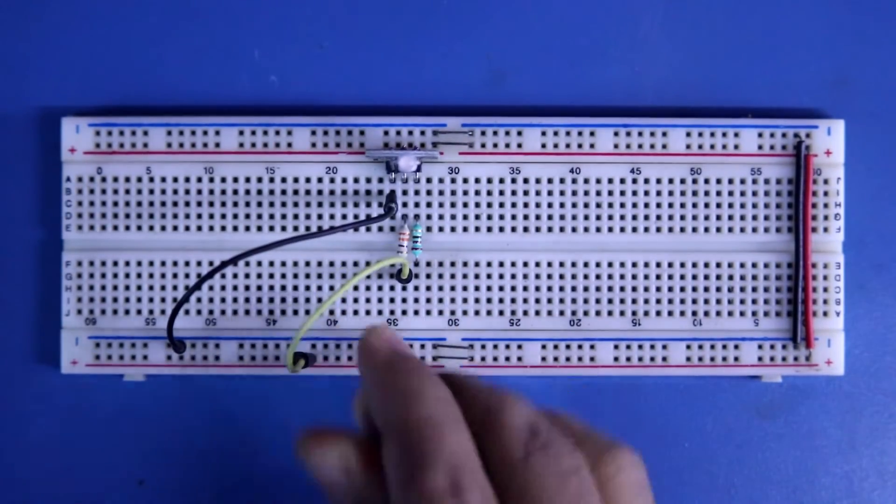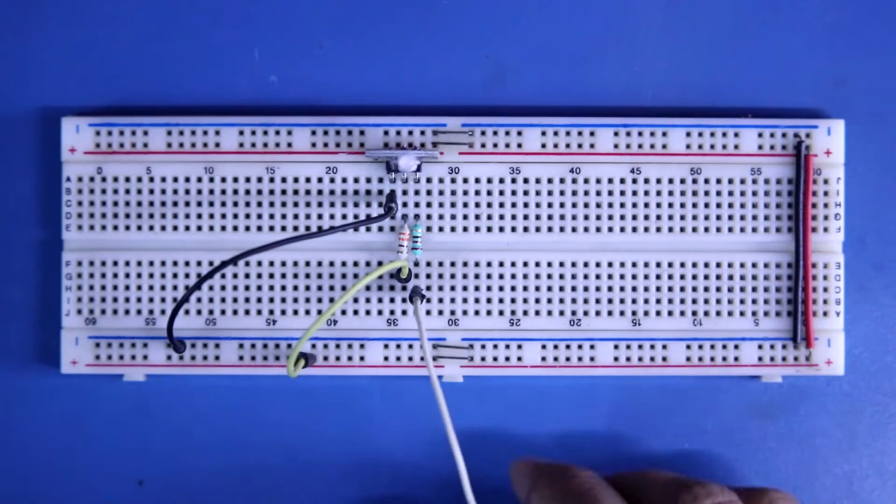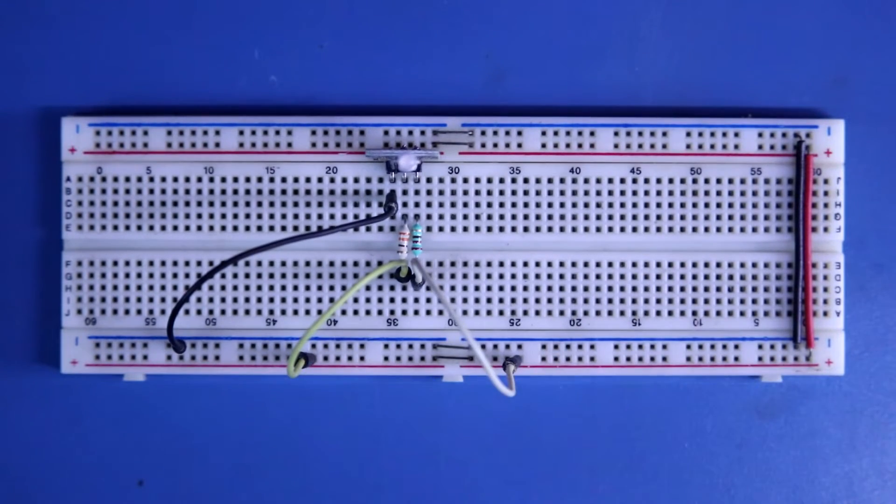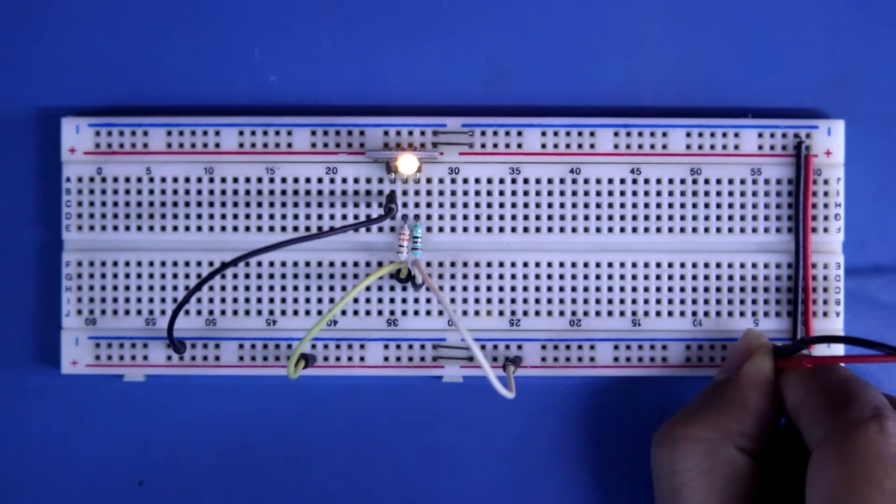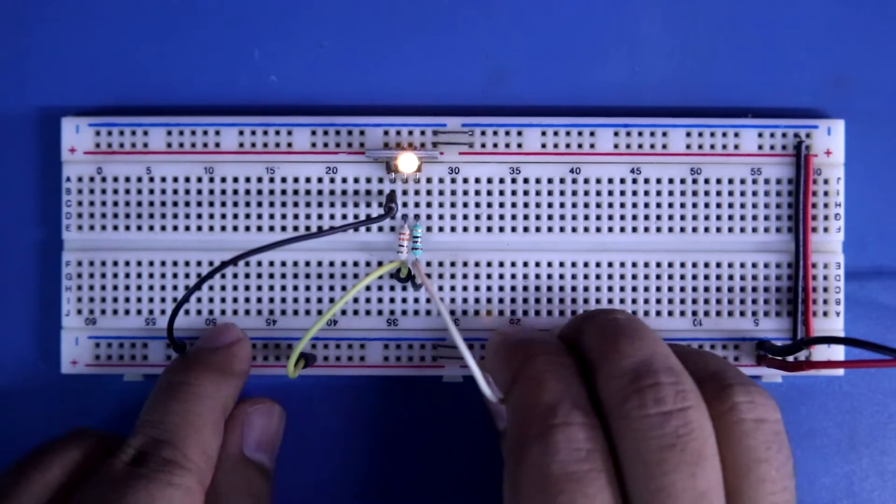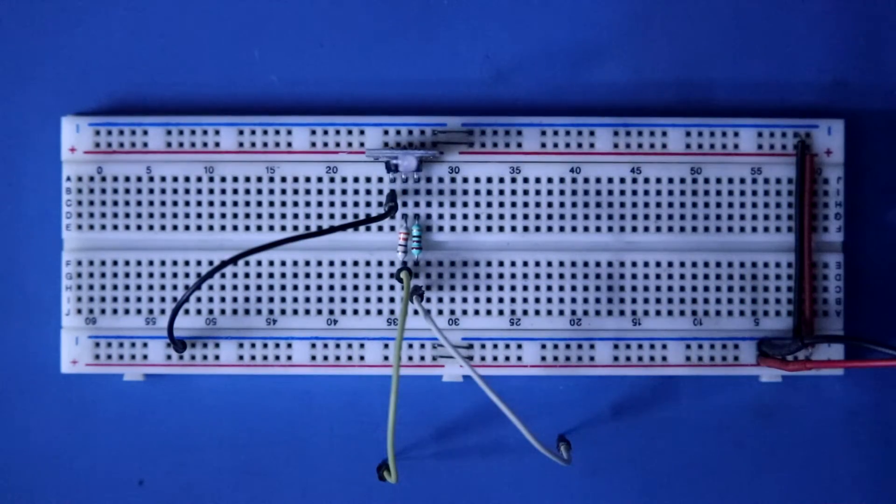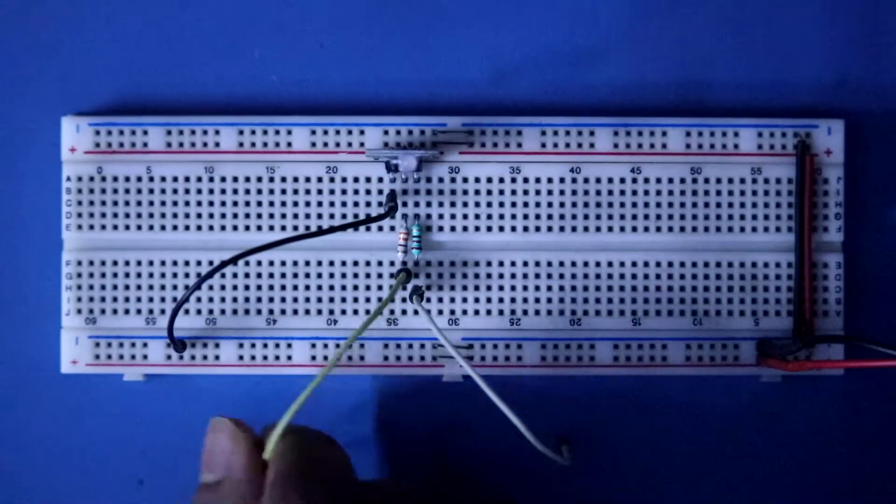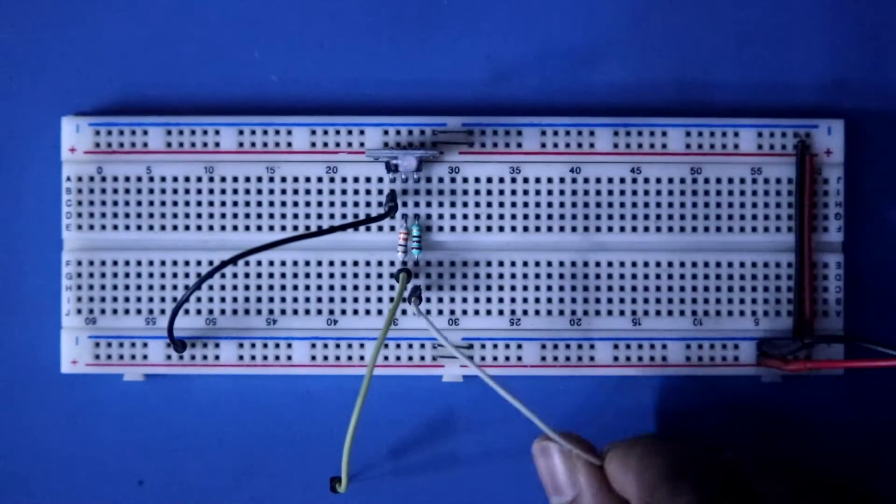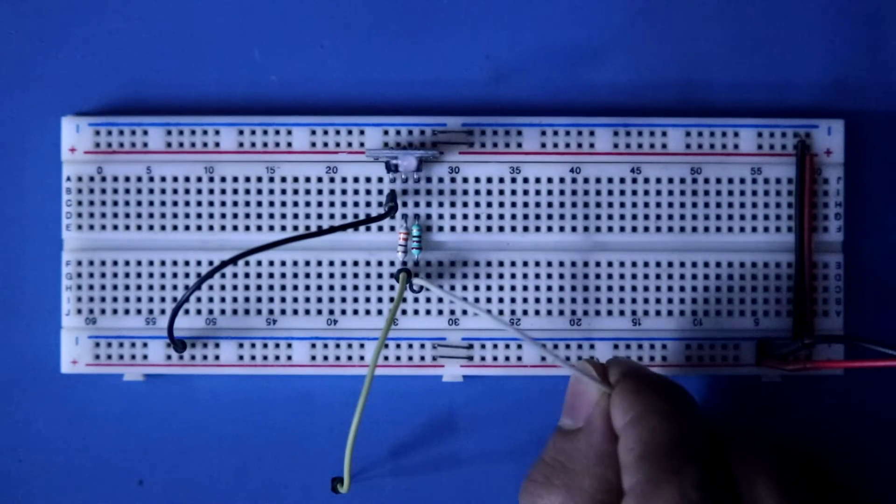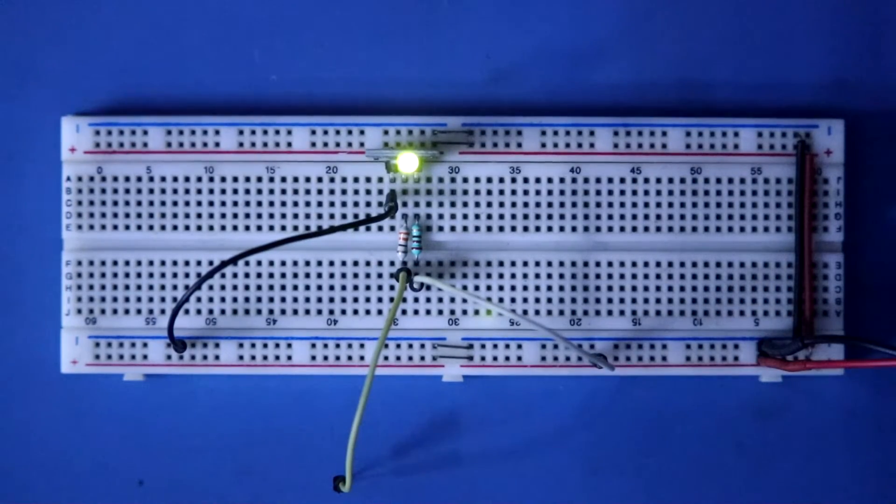Now we can connect this both to the positive rail. Now I am connecting 5 volt to the breadboard. Now see here. This is green pin. If I put this to positive rail, now it is glowing green.